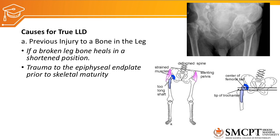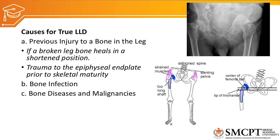Additional causes of true limb length discrepancy include trauma to the epiphyseal end plate prior to skeletal maturity, which can cause abnormal growth on one side. Bone infections, bone diseases, and malignancies are also causes. One of the most common and important causes is arthroplasty — the replacement of a joint with an artificial substance. As seen in the picture here, the hip joint has been replaced by an artificial substance, which is called hip arthroplasty.